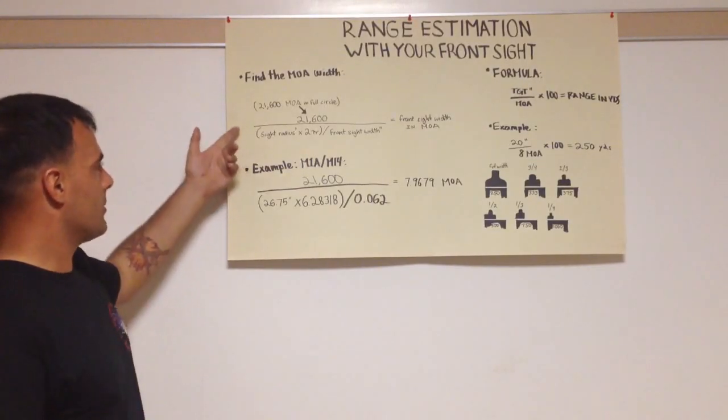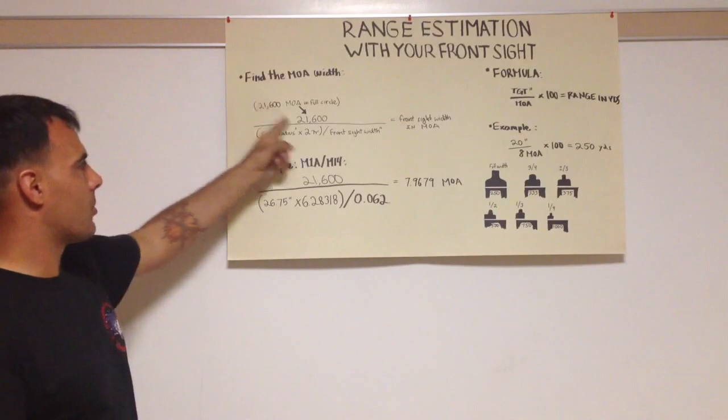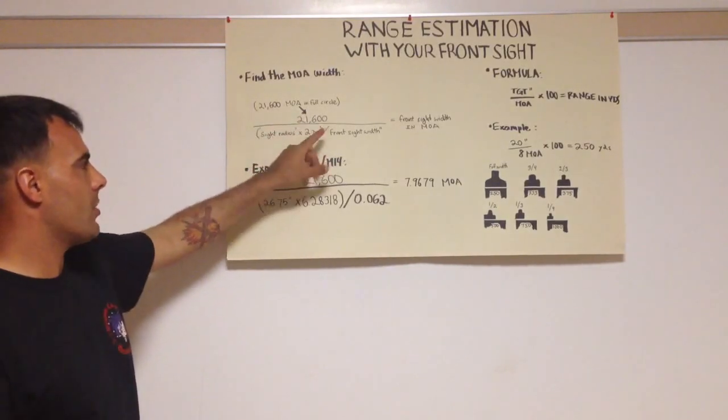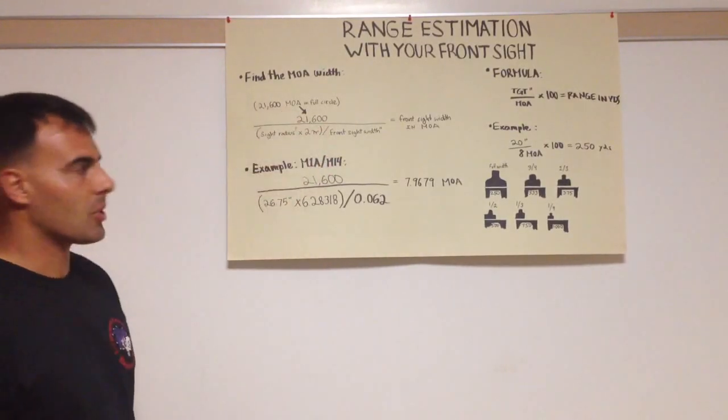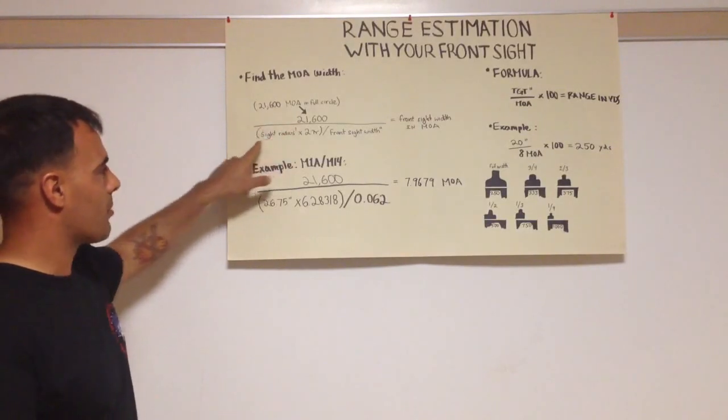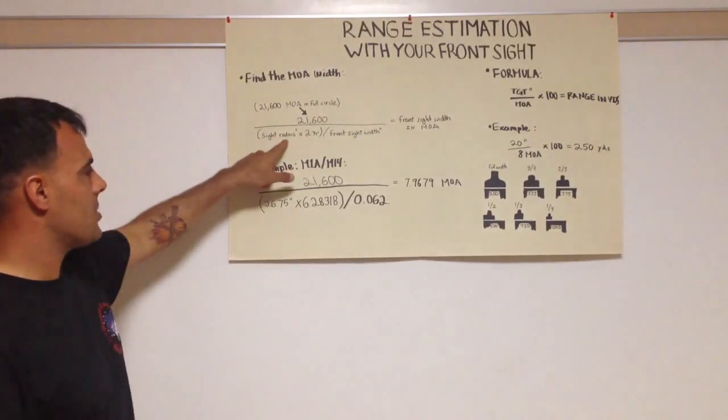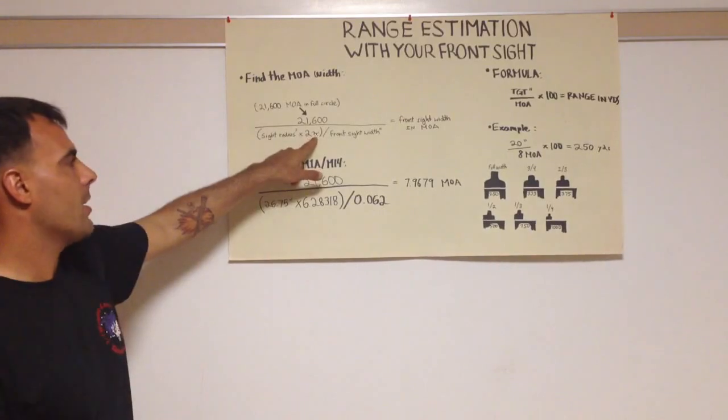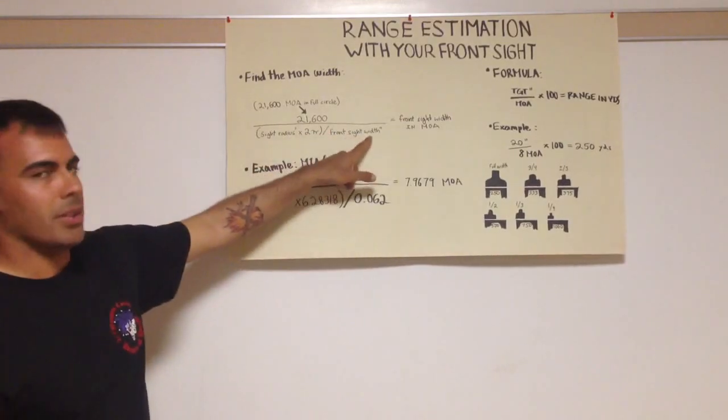To do it, there's a formula. The formula is 21,600, which is how many minutes of angle there are in a full circle. You're going to divide that by the product of your sight radius in inches multiplied by 2π divided by the front sight width in inches.